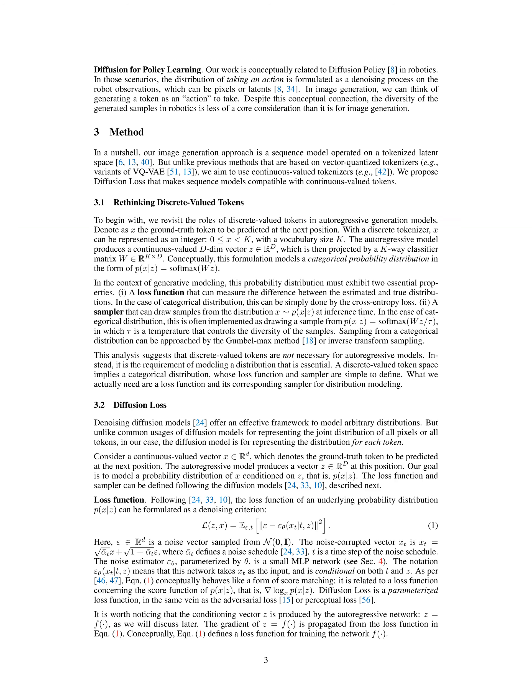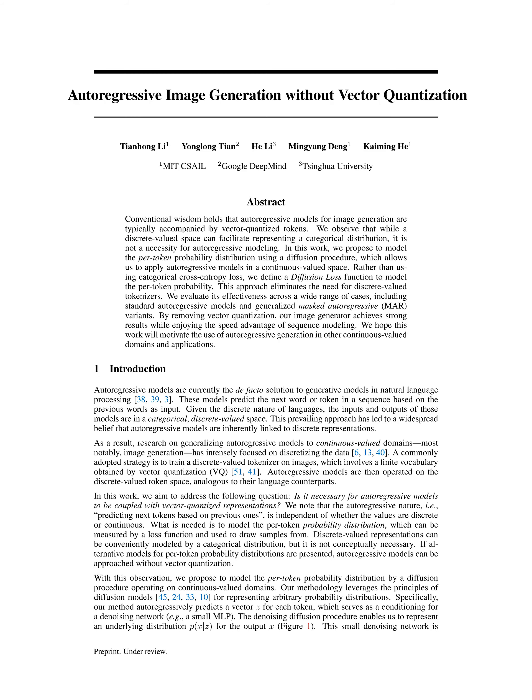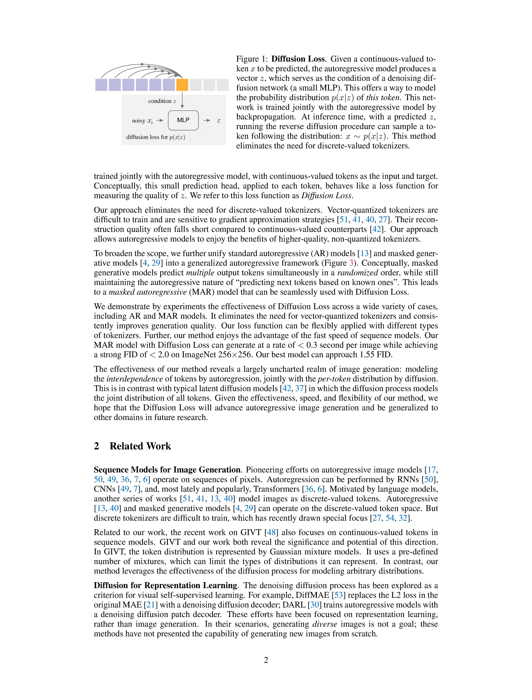The MAR model utilizes a temperature tau for sampling tokens, ensuring diversity in the generated samples. The diffusion process in the autoregressive model guided by diffusion loss allows for efficient and accurate generation of images without the need for vector quantized tokenizers. In summary, the autoregressive model with diffusion loss leverages a denoising diffusion procedure to model the per-token probability distribution on continuous-valued domains, improving generation quality and offering a flexible and efficient way to generate images by predicting tokens sequentially while considering the interdependence of tokens through diffusion.